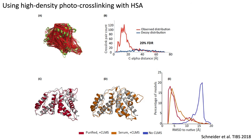This is an example of using high density photo crosslinking for albumin, just to show how it can work. This is the albumin protein, and you see all of the red crosslinks that occur. There's a very nice distribution of crosslinks that happen at the short distance, whereas poorly matched or decoy falsely identified crosslinks tend to have long distances. Looking at either the purified or the serum-containing albumin, you can see very similar models with similar distance restraints, whereas without crosslinking we just see a very odd conformation that shows no relationship to the native protein.